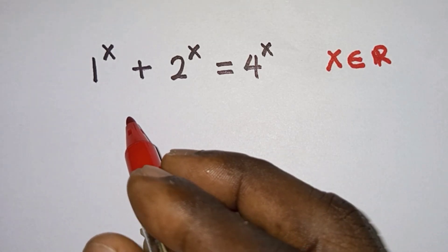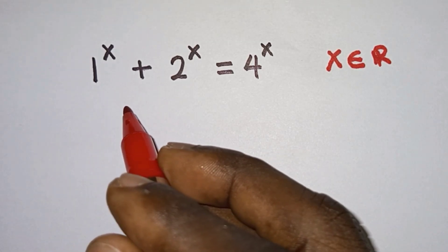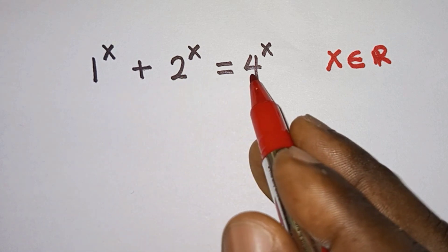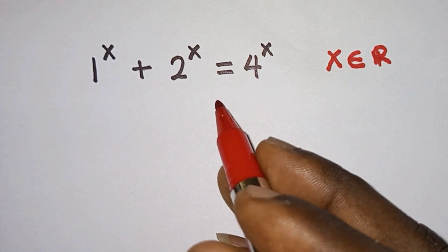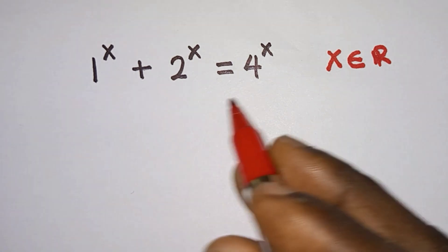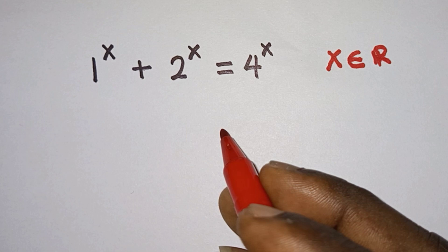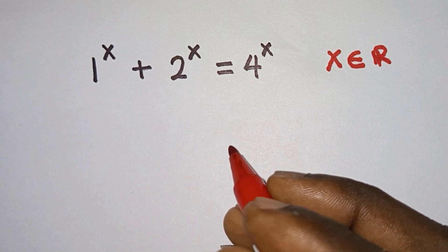Hello everyone, in this video we are given this nice exponential equation 1 to the power x plus 2 to the power x equals 4 to the power x, and we are to find the value of x where x is a real number. Before we begin, if you are new here, please subscribe to my channel. Now let's get started.